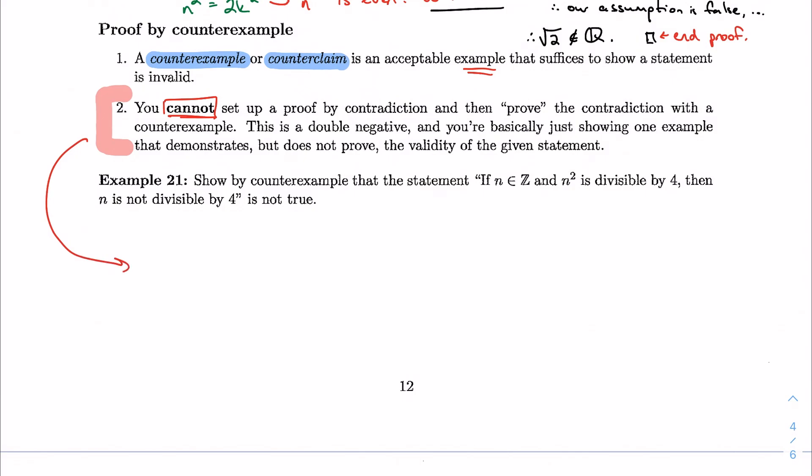So I can't say if my proof is, I don't know, show that the sum of two odd numbers is even, and I can't say assume for contradiction that the sum is odd, and then I can't say but three plus five is eight.